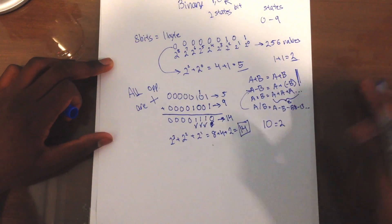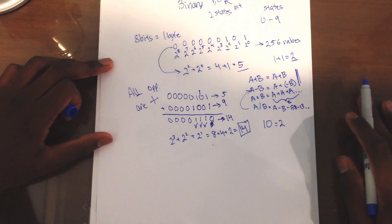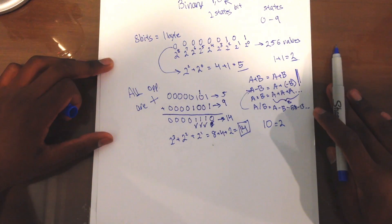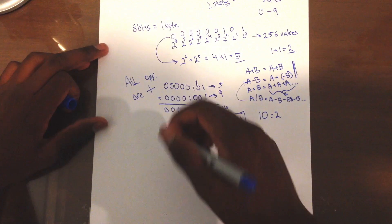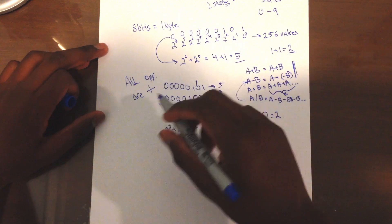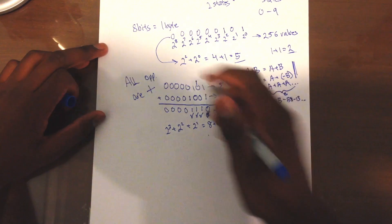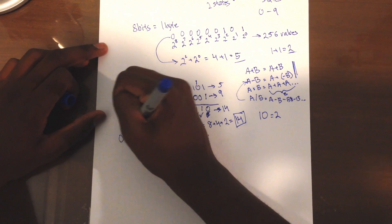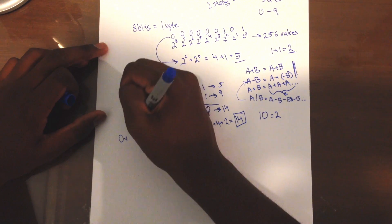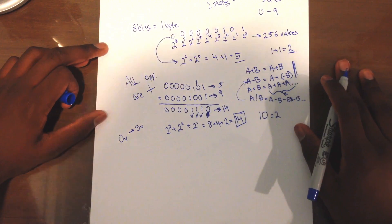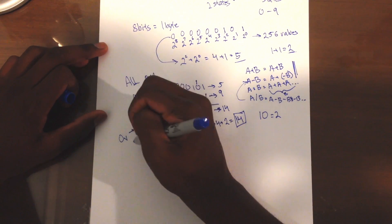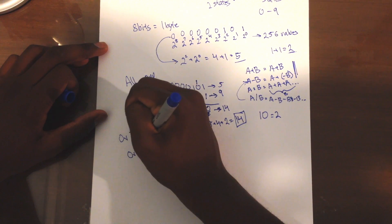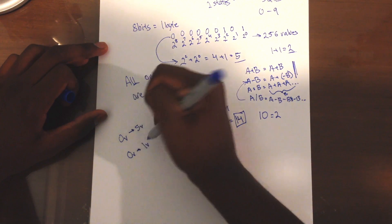That is super cool. Now you know how to add numbers just like a CPU does in binary. The reason the computer uses binary is because it's very easy to distinguish between states. Computers we're building operate from 0 to 5 volts.